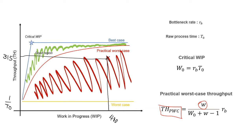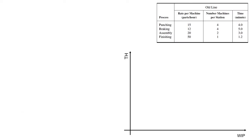If the current situation falls within the good region we can say the line is performing well; if it is in the bad region the line is not performing well. Now let's look at the old line. The throughput for the old line is 315 parts per day, which equals 39.375 parts per hour.